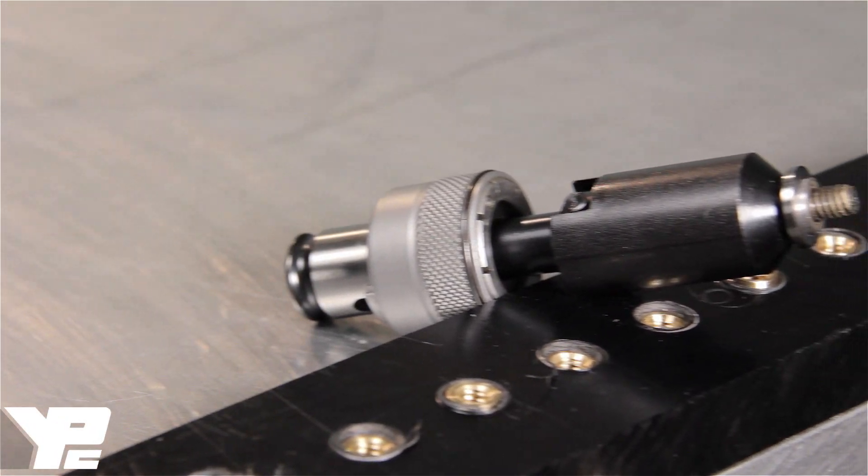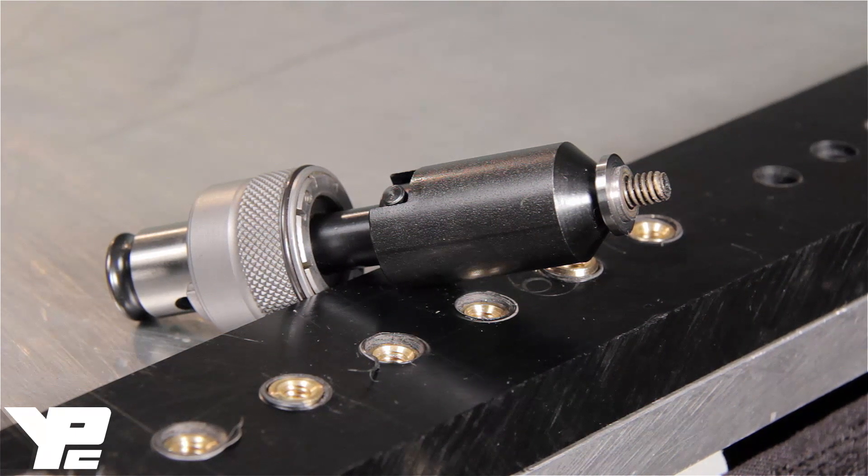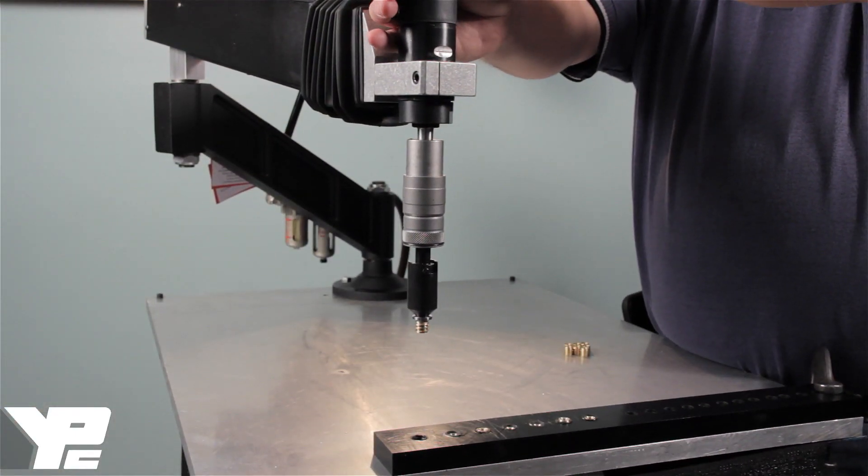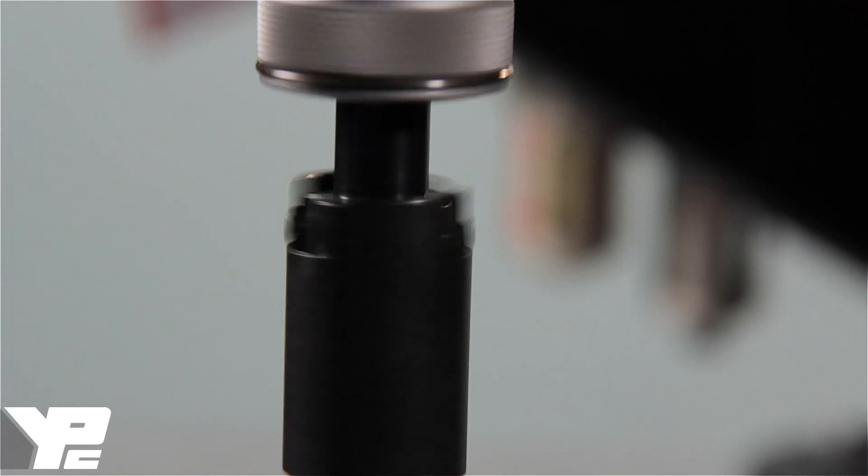First, predetermine the insert size and hole size diameter. Select the proper insert driver per the thread callout. While depressing the tongue, hold the insert to the stud, allowing it to thread on.